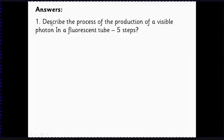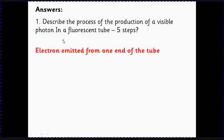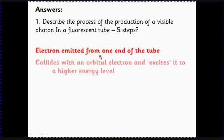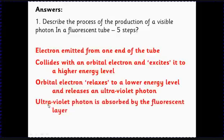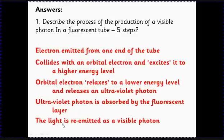What you need to be able to do most crucially here is just to explain the steps of producing visible light in a fluorescent tube. So what we get is electrons emitted from one end of the tube. They're accelerated down the tube. They collide with orbital electrons which excite them to a higher energy level. The orbital electron then de-excites to a lower energy level and produces an ultraviolet photon. The ultraviolet photon is absorbed by the fluorescent layer on the inside of the tube, and then that light is re-emitted as a visible photon.